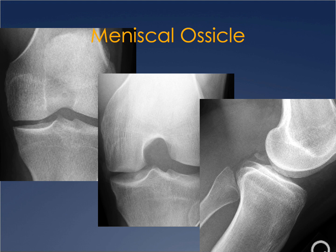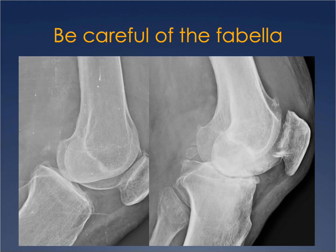Be aware of a small ovoid osseous body that can sometimes be seen in the inner aspect of the medial femorotibial compartment. If it is a well-circumscribed ovoid osseous body, it is called a meniscal ossicle — fairly common. One last area where residents get confused is the fabella, which is an accessory bone usually in the lateral head of the gastrocnemius that can be mistakenly called a loose body. Be careful not to make that call.